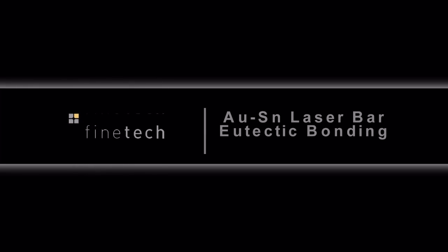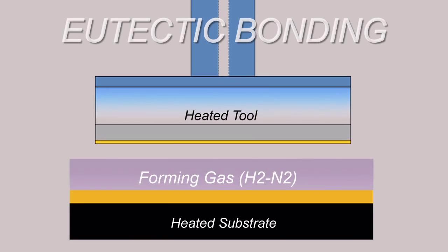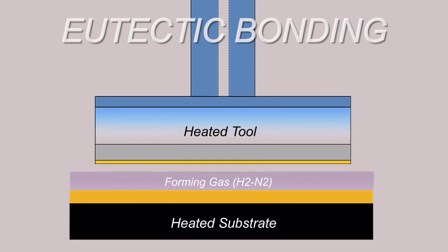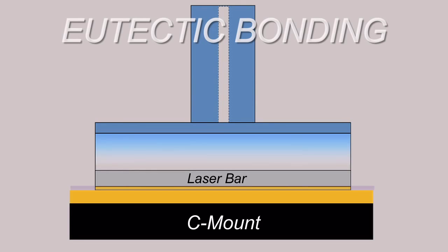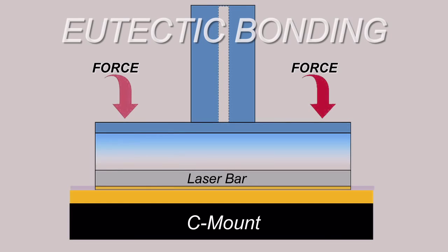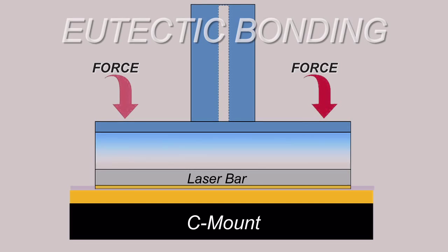Gold-Tin Laser Bar Bonding – The Need for Accuracy and Process Control. Let's take a look at the eutectic bonding technology, the application of heat to both laser and C-mount, using a controlled downward pressure, an inert atmosphere, and forming gas to produce a fluxless process.